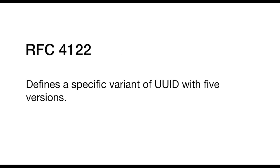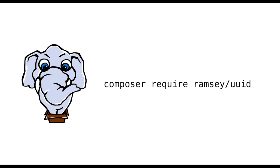There are several types of UUIDs, but the specific variant is defined in RFC 4122. This defines a variant that has five different versions of UUID. We'll focus on those five versions using the Ramsey UUID library. You can get this library very easily through Packagist — just install it with Composer: composer require ramsey/uuid. All of the examples in the rest of this presentation assume you're already using namespaces, so at the top of your script you might have something like: use Ramsey\UUID\UUID.